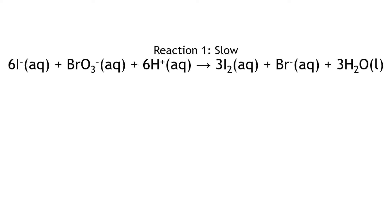In this lab, we will investigate how to measure the rate of a reaction and we will experimentally determine the rate law for a reaction. We will be measuring the rate of this reaction. Normally this reaction is somewhat slow at room temperature, but ultimately the reaction rate will depend on the concentration of the reactants. So we will be adding potassium iodide, potassium bromate, and hydrochloric acid in different concentrations and compare the reaction rates at these different concentrations. This will help us write a rate law.